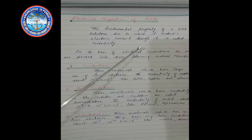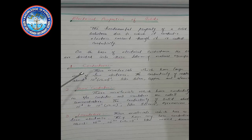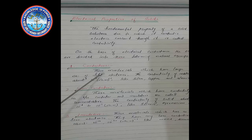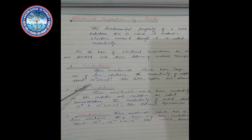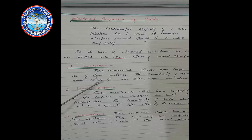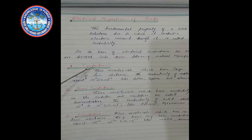Number 1 — Conductor: those solids which have a large number of free electrons. The conductivity of a metal is about 10 to the power 7 ohm-meter inverse. Examples include silver, copper, and aluminium. These materials are called conductors.